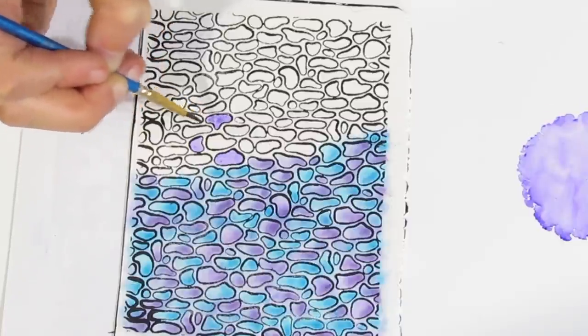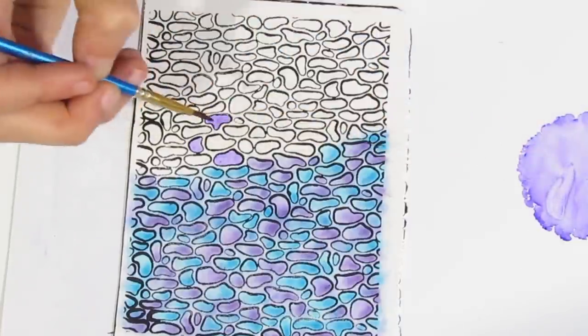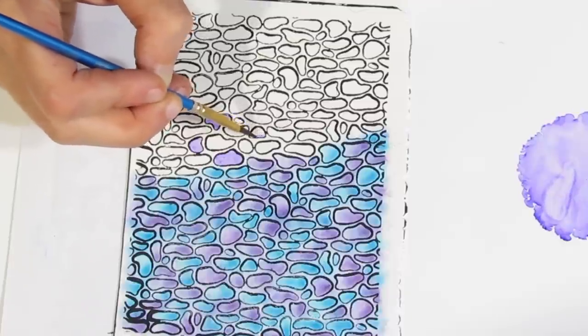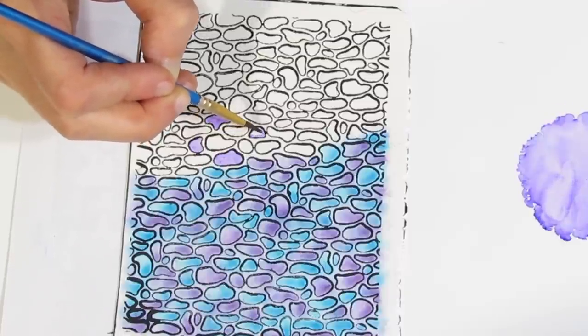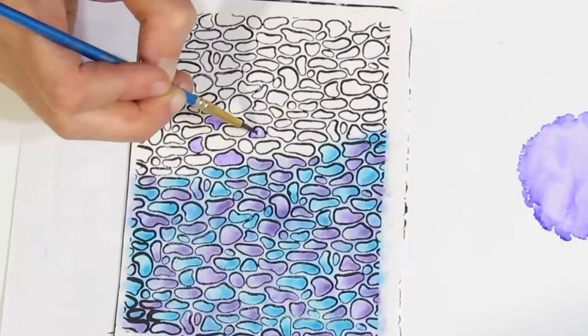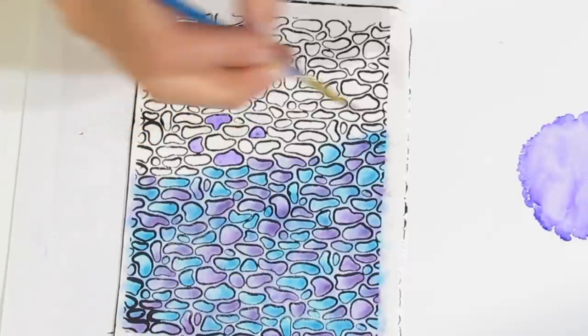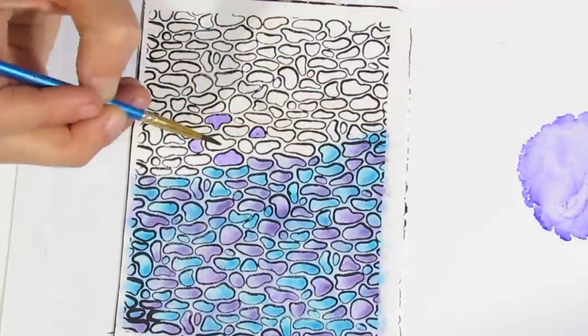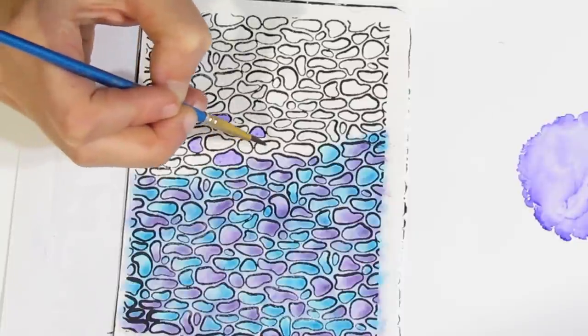So you can put both effects onto your veneer if you want. It's completely up to you. Or you can just put one on. It's completely up to you. So I'm just going to continue coloring the rest of this until it is finished. And I'll show you what it looks like.